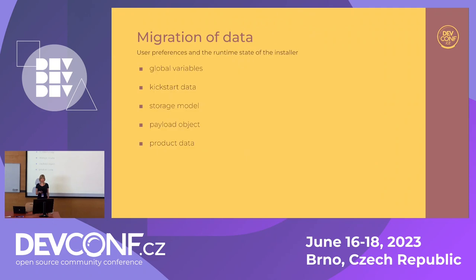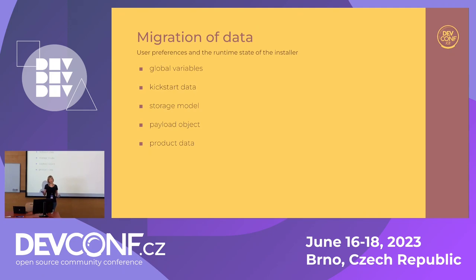Based on that, we targeted the data. Anaconda had a lot of weird data objects. We had a lot of global variables, but we eventually got rid of them. Another weird object was the Kickstart data. Anaconda has a special mode where you can automatically run installation using a Kickstart file, and the Kickstart data is a Python representation of that file. But it was also used for interactive installation as the main data holder of user preferences, which doesn't make sense because Kickstart doesn't support everything Anaconda does — so you end up with lots of workarounds and issues.